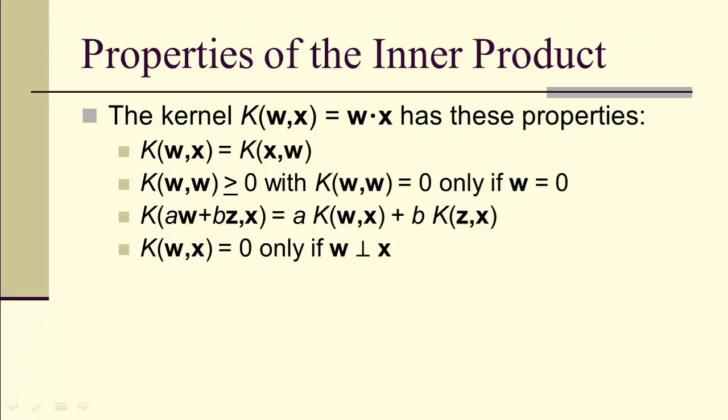What properties does an inner product have? If you take a basic linear algebra course, they'll tell you something like this. You have to have symmetric. The inner product of w with itself has to be non-negative. It can be 0 only if w is 0. The inner product is linear in the first argument. And that the inner product of w and x is 0, only if w and x are perpendicular.